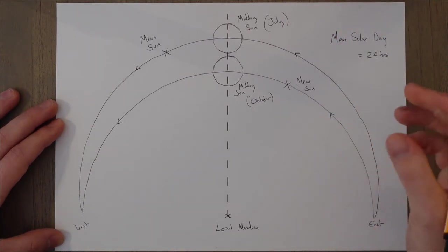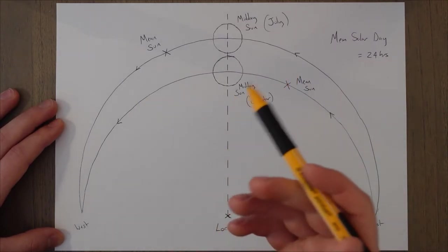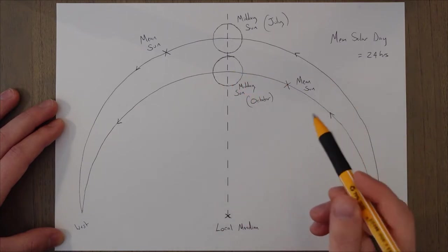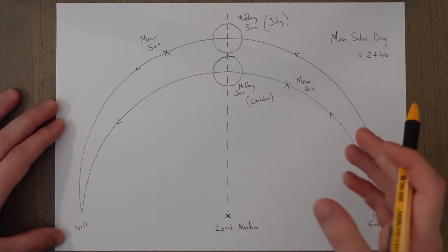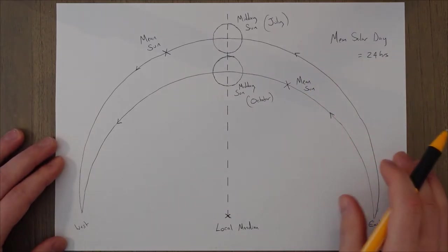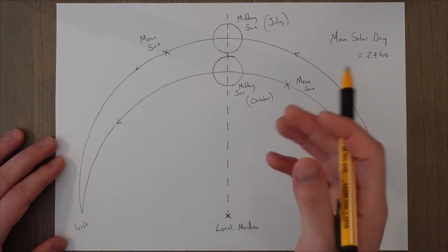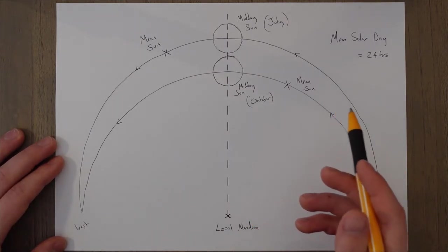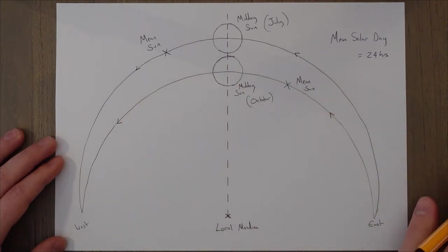If we then apply the same averaging technique to the physical position in terms of rotation, or its right ascension, of the sun in the sky throughout the year, we can create a fictional mean sun, an average sun position. This average sun, this mean sun, appears to rotate around the Earth in a westerly direction. It doesn't actually rotate around the Earth, we're rotating around it, but from our perspective it appears to rotate in a westerly direction.